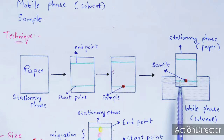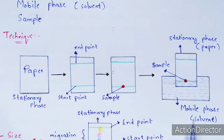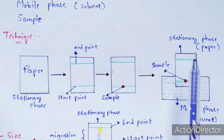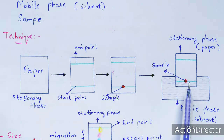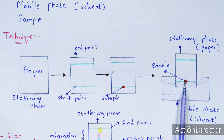Once the stationary phase is ready, it should be dipped into the mobile phase, which consists of solvent. Make sure that the entire paper does not get dipped — only the portion up to the sample mark at the start point should be dipped into the mobile phase.